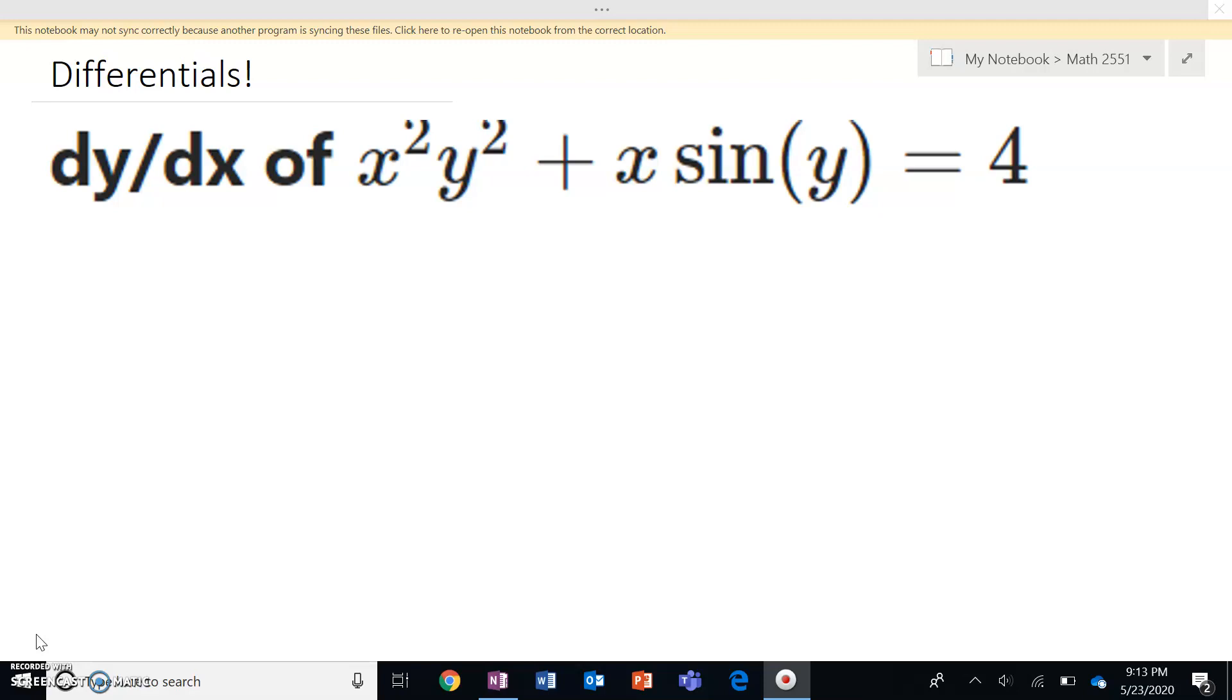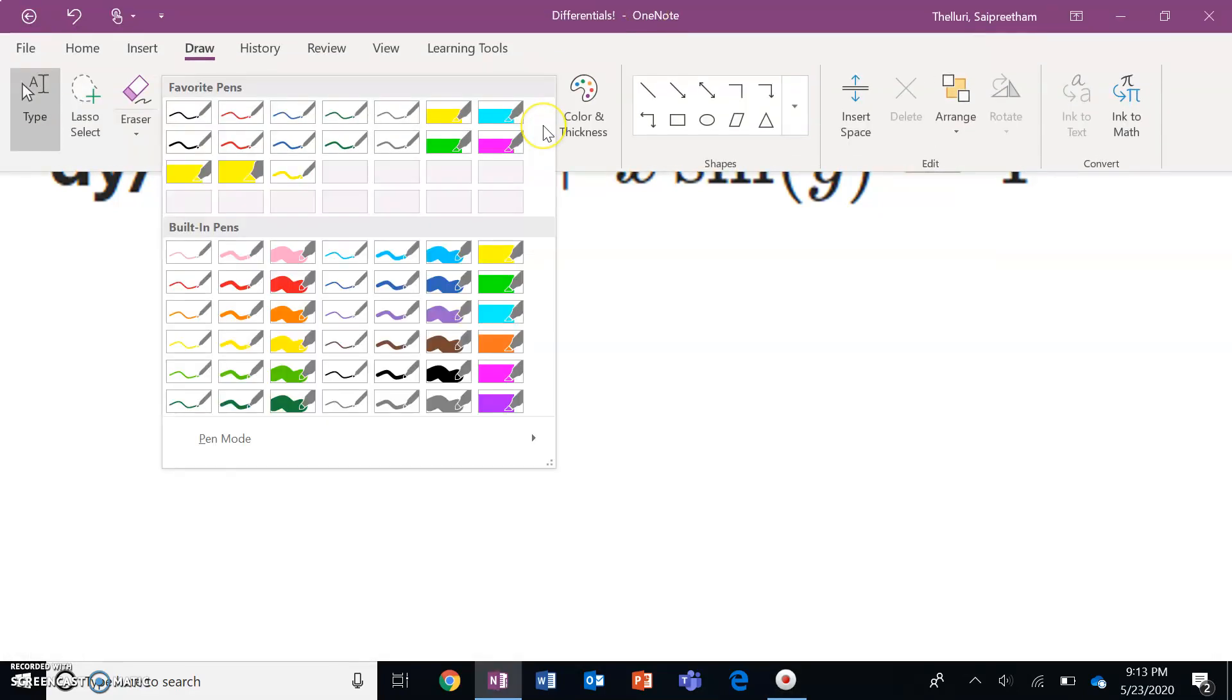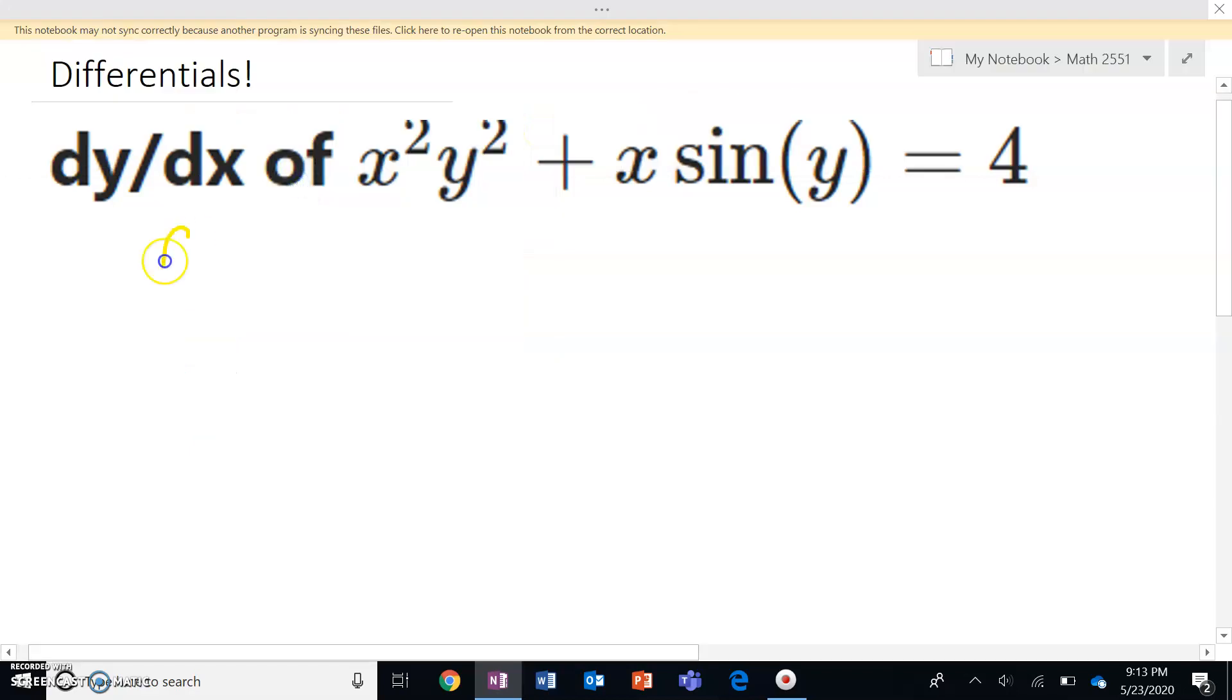As you can see, we've got to find the dy over dx of x squared y squared plus x sine y equals 4. So the first thing, I'm about to redefine my function as an elementary double variable function with all the terms on one side: x squared y squared plus x sine y minus 4.